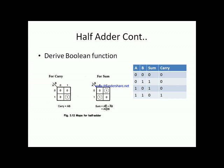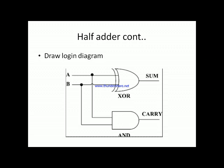Now we have the simplified Boolean functions for both sum and carry. The last step is drawing the logic diagram. The input variables are A and B. The XOR gate applied to A and B gives the sum output, and an AND gate applied to A and B gives the carry output. This is how the half adder is constructed.